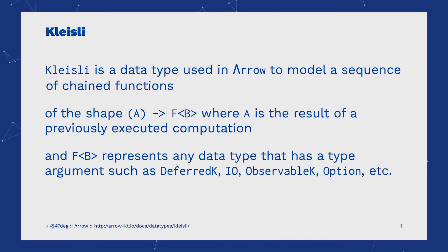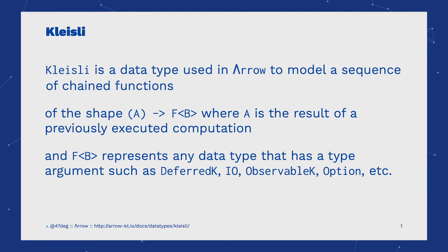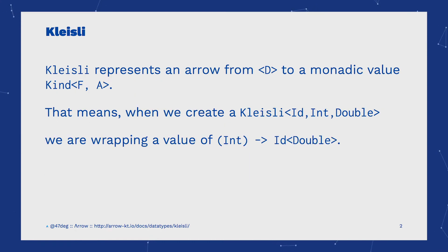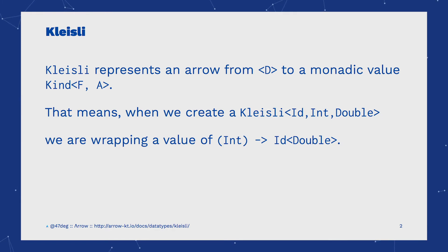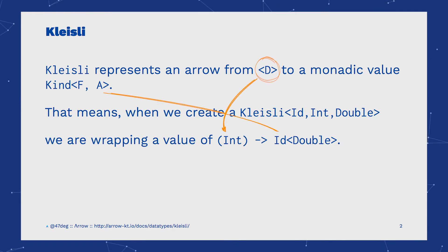Kleisli is a data type used in Arrow to model a sequence of chain functions of the shape from A to F of B. This allows us to chain transformations of types within a monadic context. Kleisli represents an arrow from D to the monadic value kind of F and A, meaning inside the Kleisli we transform type D into type A inside F.